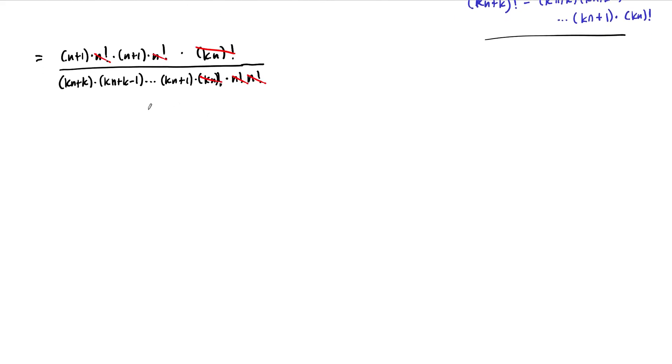Give myself some more room so we can see what's left. We are left with n plus 1 times n plus 1 over this product down here, where k is unknown: k times n plus k times k times n plus k minus 1, all the way down to k times n plus 1.